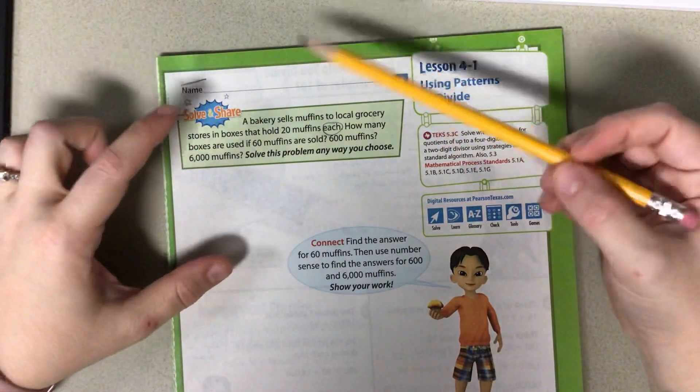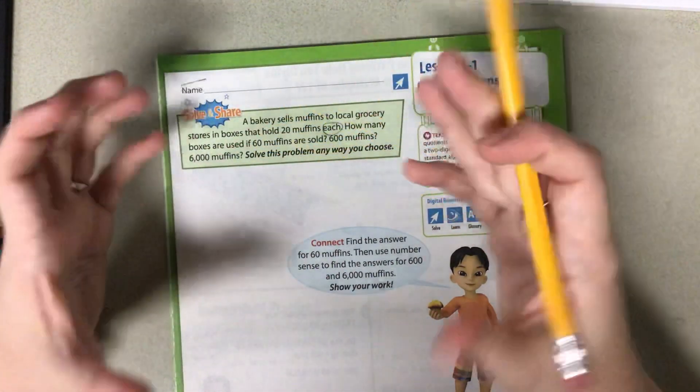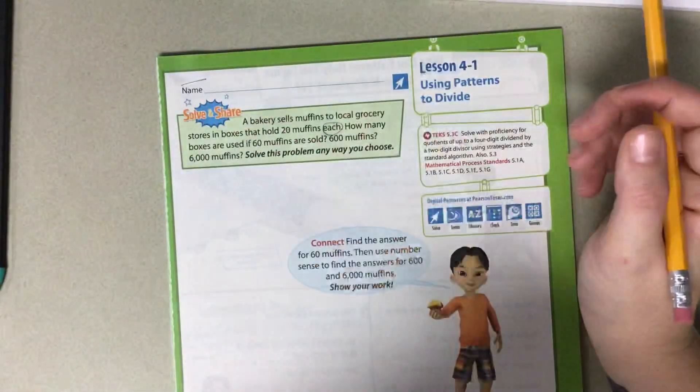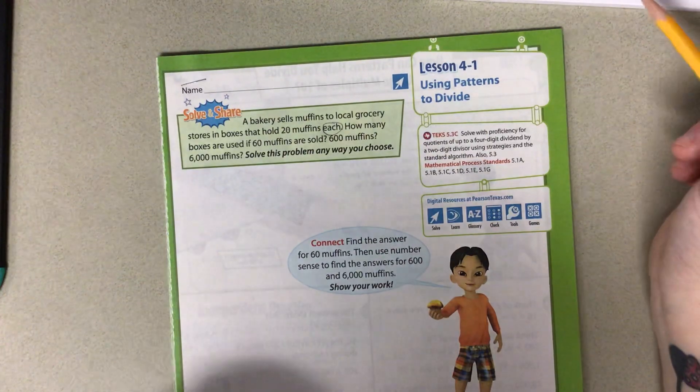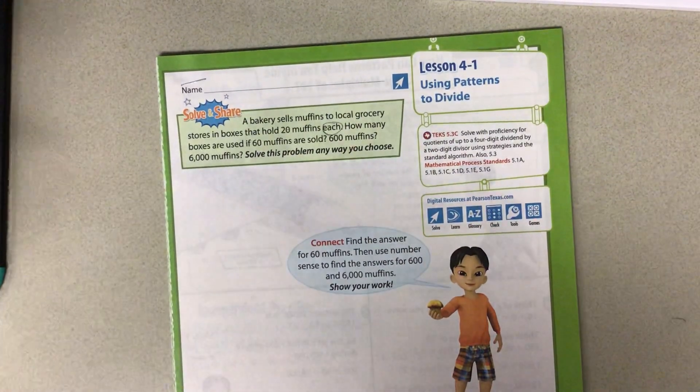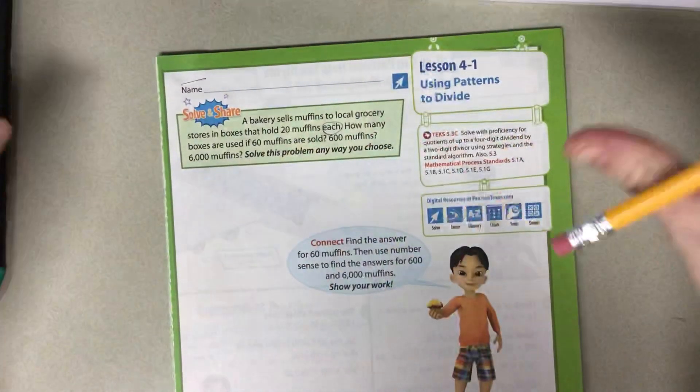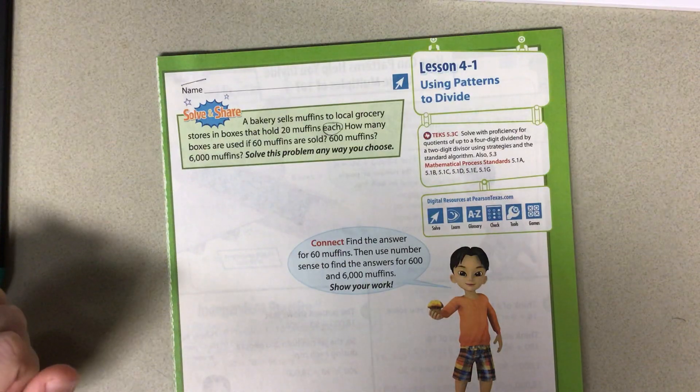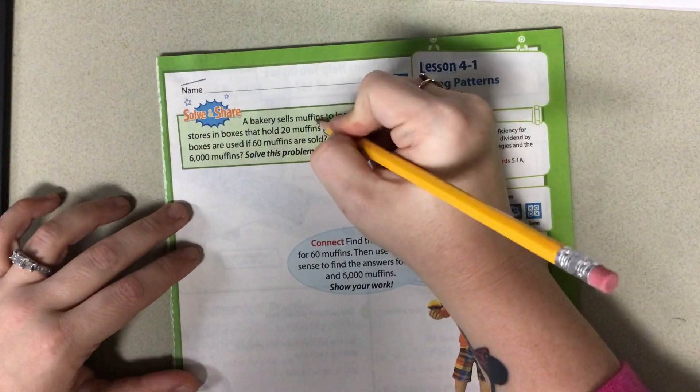If we're putting 20 muffins into a box, we have a bunch of muffins and we take 20 of them and we're putting them in this box, and we're taking 20 of them and putting them in this box. What are you doing to these muffins? Are you putting them all together to figure out how many muffins total, or are you separating them into boxes? You're separating them. Good. So if you're separating equally, you are dividing.